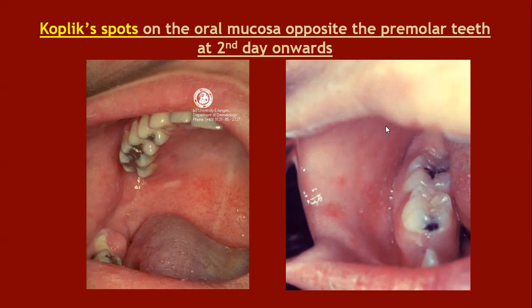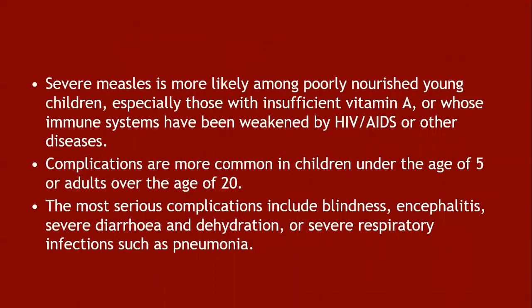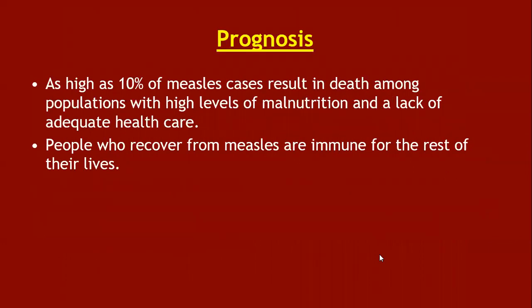Severe measles is more likely among poorly nourished young children, especially those with insufficient vitamin A or whose immune systems have been weakened by HIV/AIDS or other immunosuppressive treatment. Complications are more common in children under five years of age or adults over 20. The most serious complications include blindness, encephalitis, severe diarrhea and dehydration, and severe respiratory infections such as pneumonia.